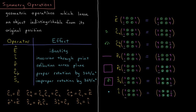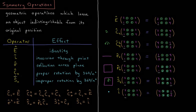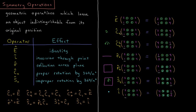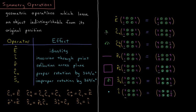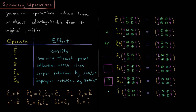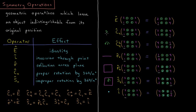We have cn, the proper rotation by 360 over n degrees. So if I have something like c4, that's rotation by 360 over four, which is 90 degrees. I've indicated this by drawing a 90 degree arrow around this axis here, rotating around an axis perpendicular to the plane of the board coming out at us.